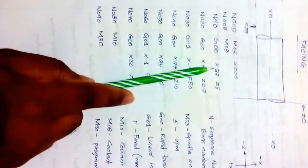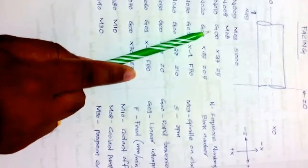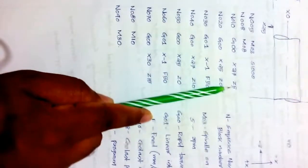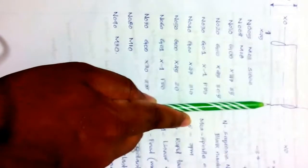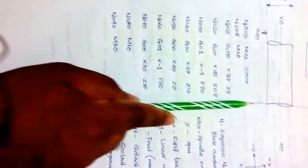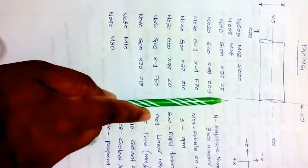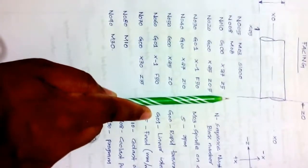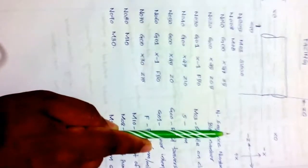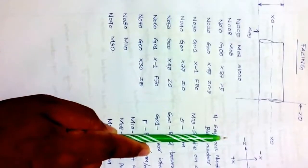N010: G00 X27 Z5. G00 means rapid, so the tool moves rapidly to coordinate position X27 Z5. We know this surface is X25, so X27 means the tool is in the backward direction from the surface. Z5 means the tool is 5mm away from the Z0 reference. The tool moves to X27 Z5 rapidly.